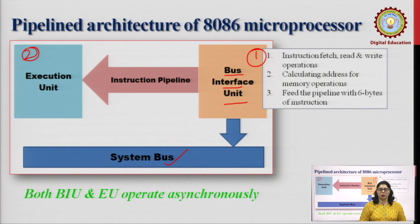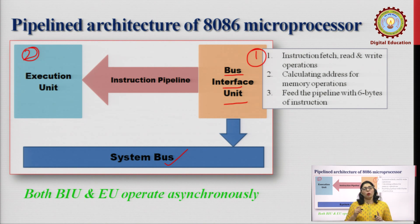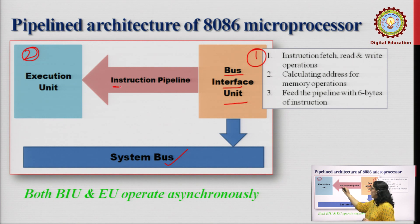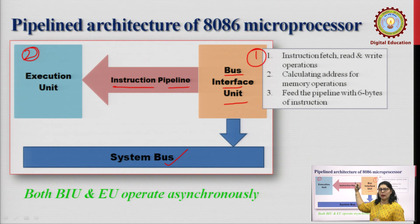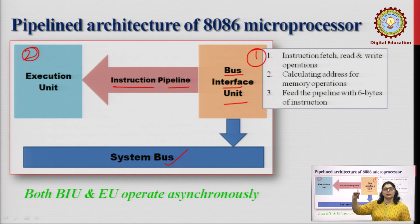Broadly speaking, the Bus Interface Unit's job is to fetch instructions, perform read and write operations, calculate addresses for memory operations, and feed the pipeline with six bytes of instructions. This is the instruction pipeline, inside which we will keep six instructions stored, so that the execution unit can keep decoding and executing them one after another. This instruction pipeline is somewhat similar to a real-world analogy.